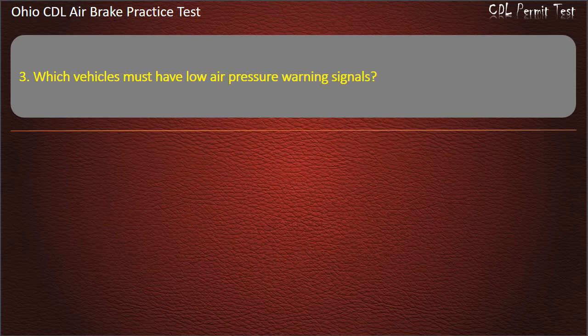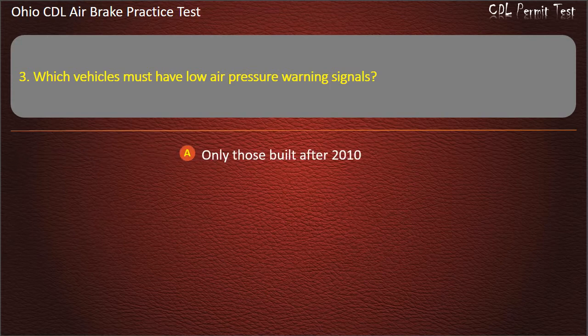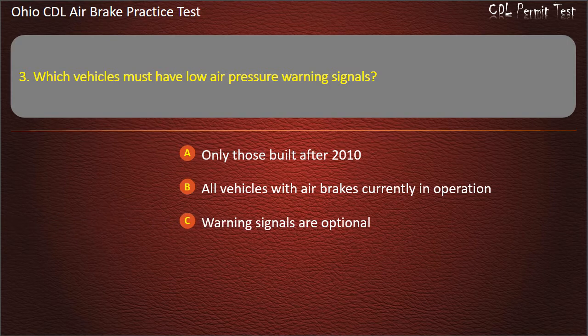Question 3: Which vehicles must have low air pressure warning signals? Only those built after 2010. All vehicles with air brakes currently in operation. Warning signals are optional. Only those built after 2005. Answer: All vehicles with air brakes currently in operation.